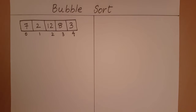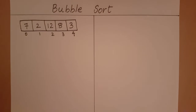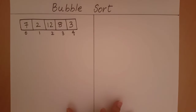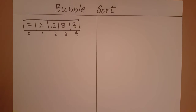What bubble sort does is it's going to try to push the largest element to the last index. How is it going to go about pushing the greatest element to the last index? This algorithm will compare the elements two at a time.